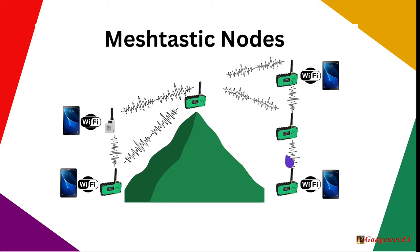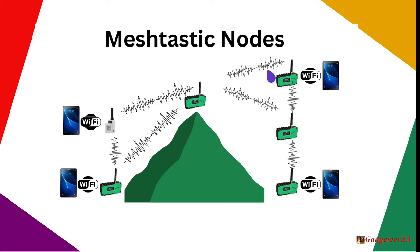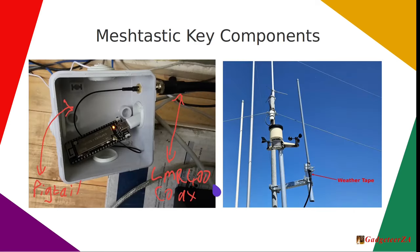This is the big difference compared to ham radio bouncing signals off the ionosphere — Meshtastic is line-of-sight but uses all available nodes to relay. That's also partly why I'm making this video: in the Cape Town area, we need more people in Newlands and Plattekloof to set up nodes, helping bounce signals around the mountain and reach the other side. More nodes means better, more seamless communication right across the city.